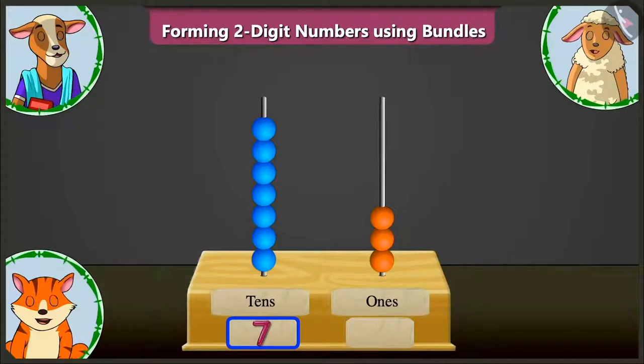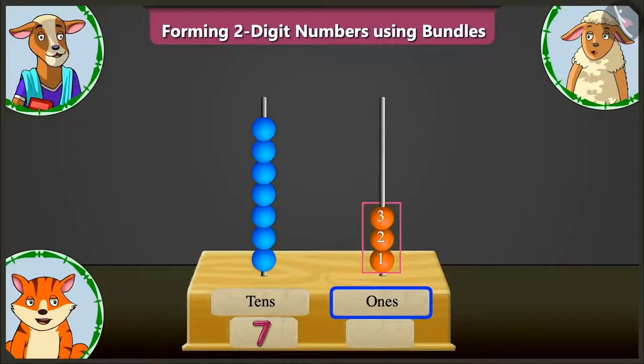Very good. Now, in the ones box, in the abacus, there are one, two and three beads. So, in the ones box, we have to write three. Well done.